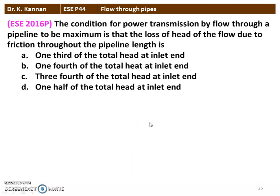The next question from the 2016 question paper: the condition for power transmission by flow through a pipeline to be maximum is that the loss of head due to friction throughout the pipeline length is one third of the total head. So for maximum power transmission, HF = H/3, where H is the total head available.